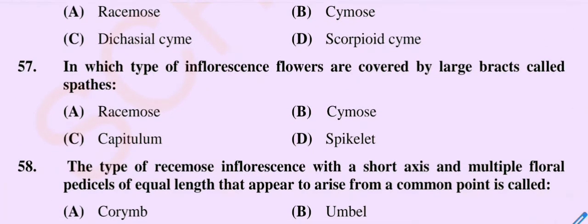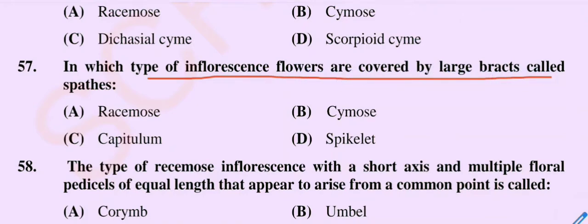Question number 57: In which type of inflorescence are flowers covered by large bracts called spathes? Option A racemose, option B cymose, option C capitulum, option D spike. The correct option is option B, cymose.